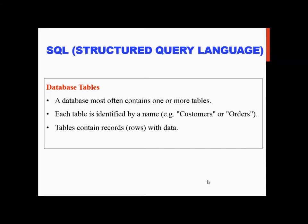Normally, all the information in the database will be stored in the form of tables. A database most often contains one or more tables. Tables can have rows and columns.